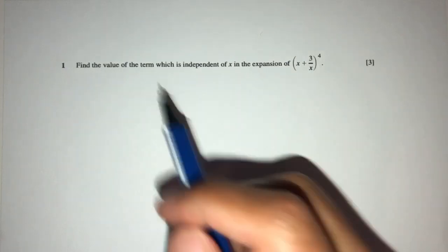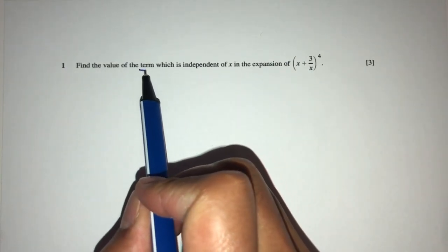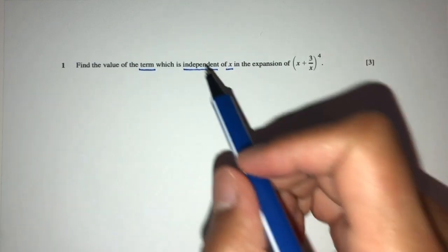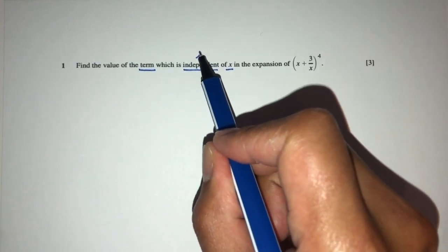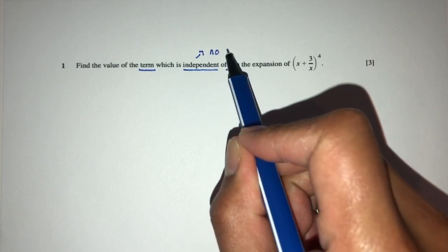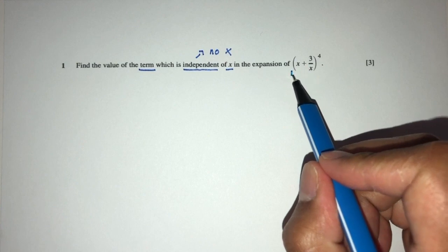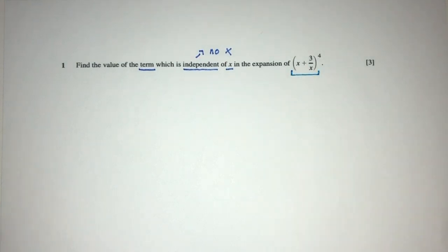Now we understand that we are trying to find the term which is independent of x. So what does it mean? It means that it is a term where we have no x. So if you were to expand the whole thing here, which term will give you something where we don't have any x?